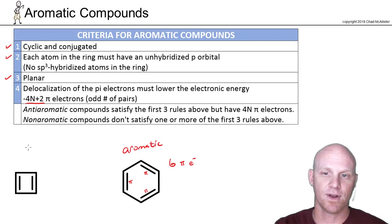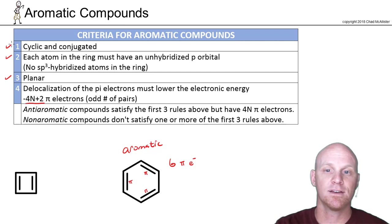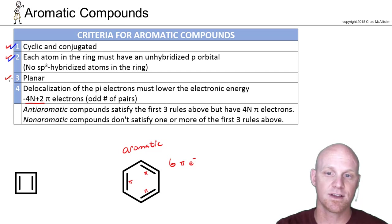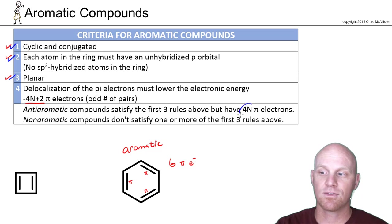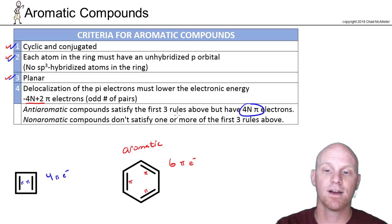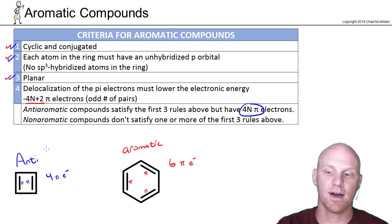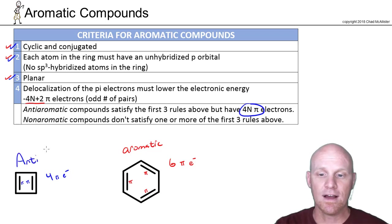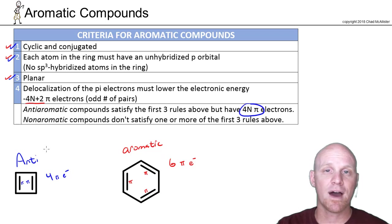Now if we look at cyclobutadiene, it is indeed cyclic and conjugated with no sp3 hybridized atoms in the ring. It's small enough to be planar. But it has only four pi electrons from the two pi bonds. With four pi electrons — two pairs, an even number of pairs — that is a multiple of four, and that's what makes it anti-aromatic instead of aromatic. So there's your big difference between anti-aromatic and aromatic: you've passed all the first three rules, but it comes down to how many pi electrons at the end.